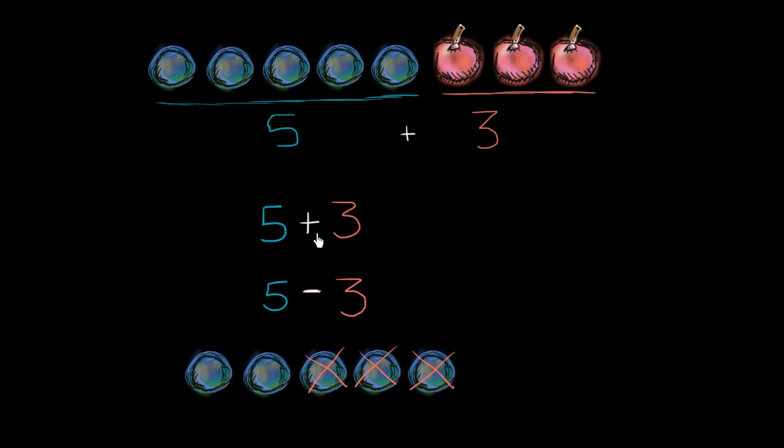So I know to add. So how many pieces of fruit do I have? Well, five plus three, we can see is, this is five, and then we have six, seven, eight pieces of fruit. So that's going to be eight in total.